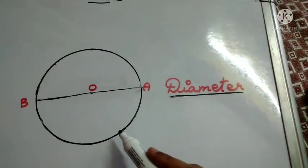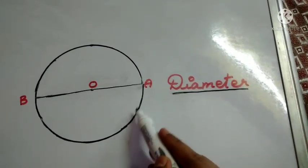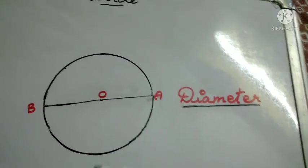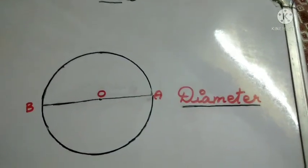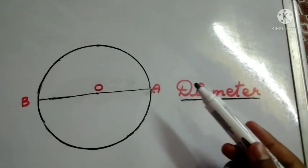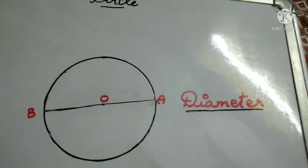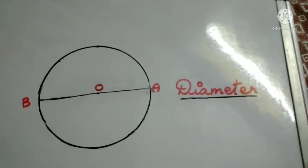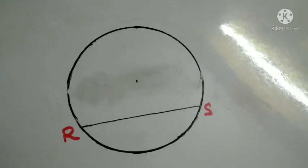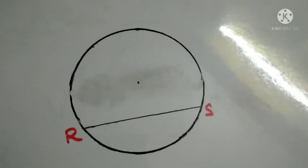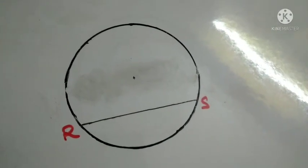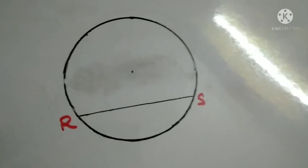Now we are going to learn what is the circumference of a circle. The circumference of a circle is the boundary of the circle. Now we are going to learn what is a chord. A line segment joining any two points of a circle is known as chord.